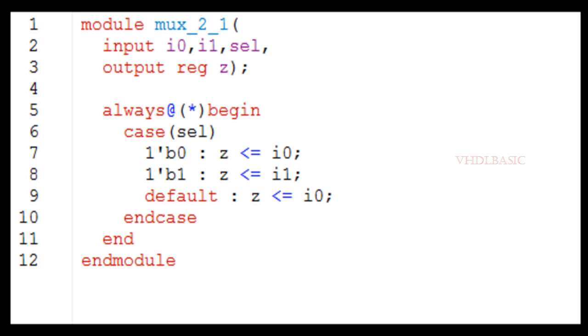Actually here, if you are not using the default, it will be fine since we utilized the select. Since it has only one bit, it could be either 0 or 1, so we utilized both cases. If we are missing any case, then the default comes into the picture. I already explained the case statement in Verilog - if you want, you can refer to that video as well.